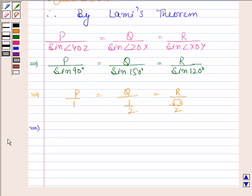This implies P to Q to R is equal to 1 to one-half to root 3 by 2.